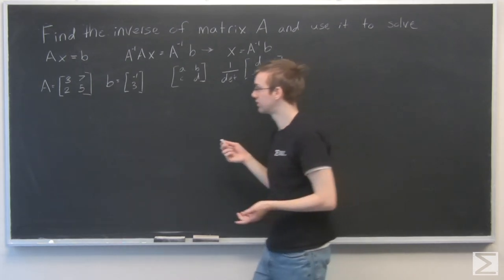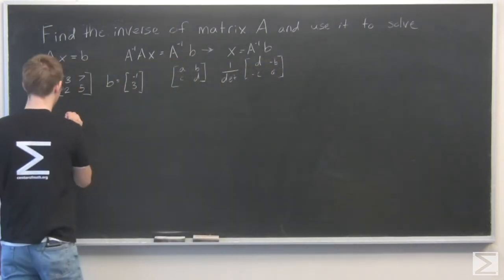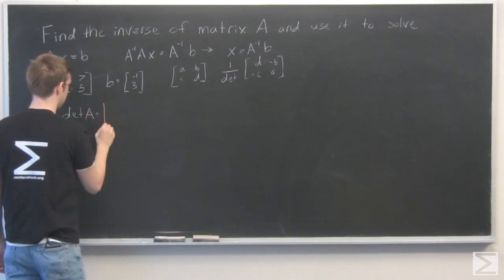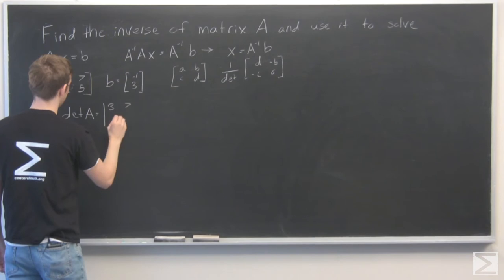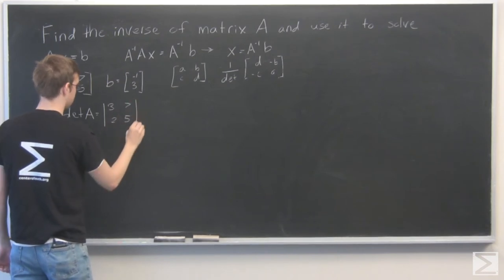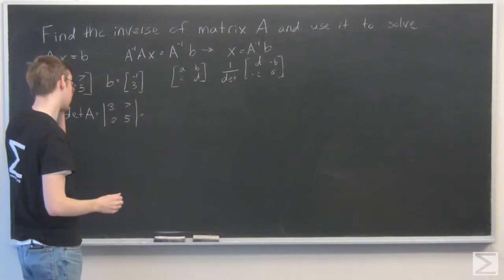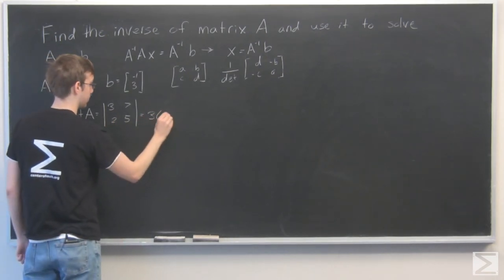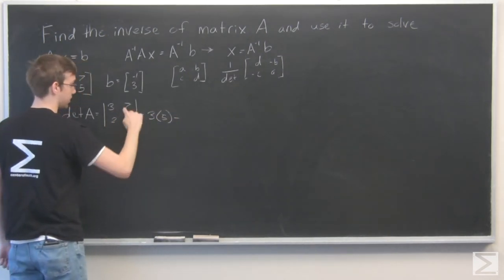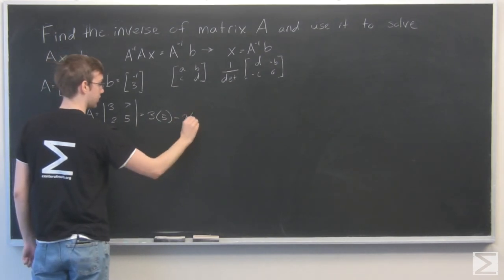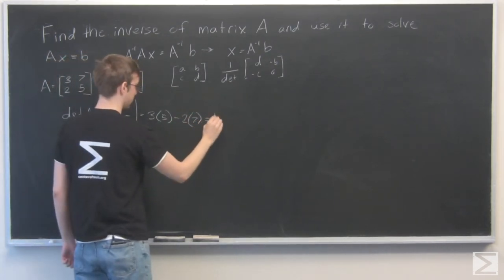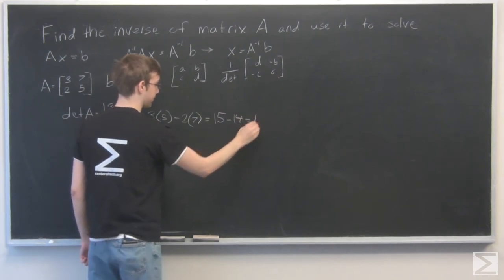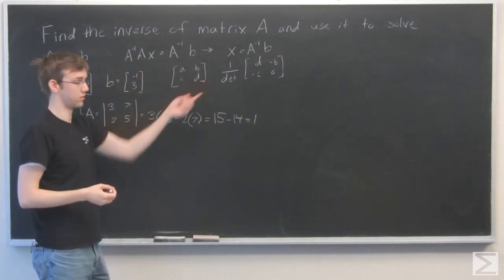So let's do that for A. We need to find the determinant of A. Use my determinant signs. So the determinant of A is 3 times 5 minus 2 times 7, and that is equal to 15 minus 14, and that's equal to 1. Awesome. So 1 over 1 is just 1.